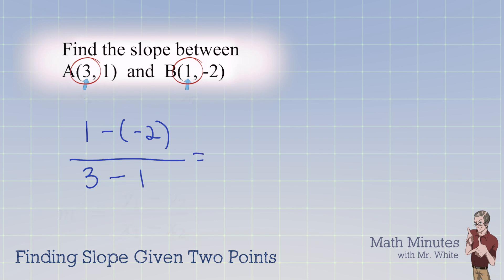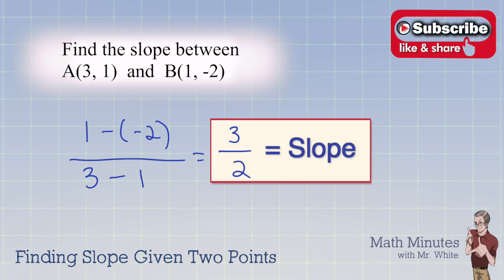And then we just simplify. That would be 1 plus 2, which is 3 on the top. And on the bottom, we have 3 minus 1, which is 2. So the slope here is 3 half. And we always write slope as a fraction just like this.